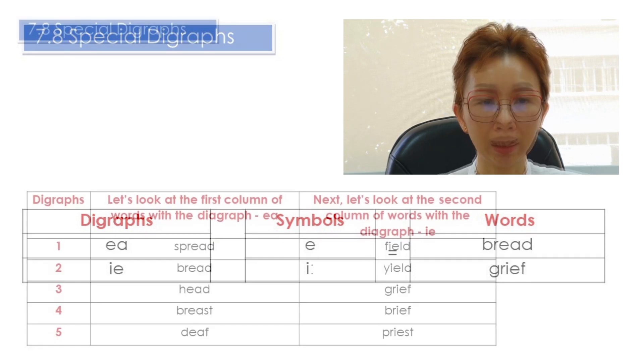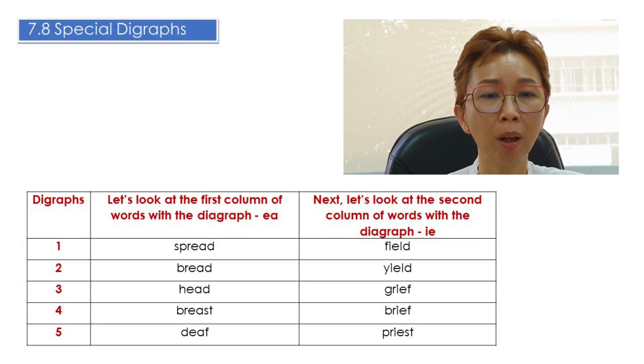Let's have more practice and let us look at the first column of words with the digraph EA. Spread, spread, spread.